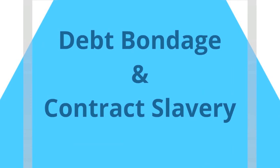The most common way that slaves are enslaved today is through things called debt bondage and contract slavery. This involves placing the slaves in some kind of debt, usually with high enough interest that the slaves can never actually escape that debt and are forced to work for the holder of that debt, usually their entire lives.